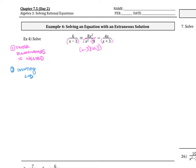The next thing you do is identify the LCD. Looking at all of the denominators here, you have x minus 3 and x plus 3, so our LCD is x minus 3 times x plus 3.